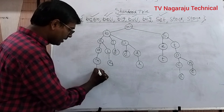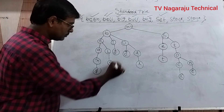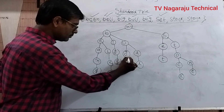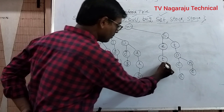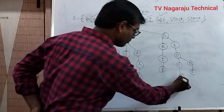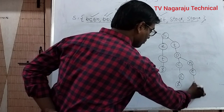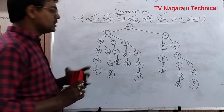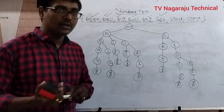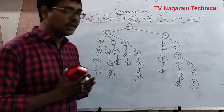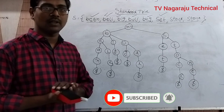Generally, the end of a string is represented with a dollar sign. This is the way to construct a standard trie. In the next session we will discuss how to construct a compressed trie along with a compact representation. Thank you.